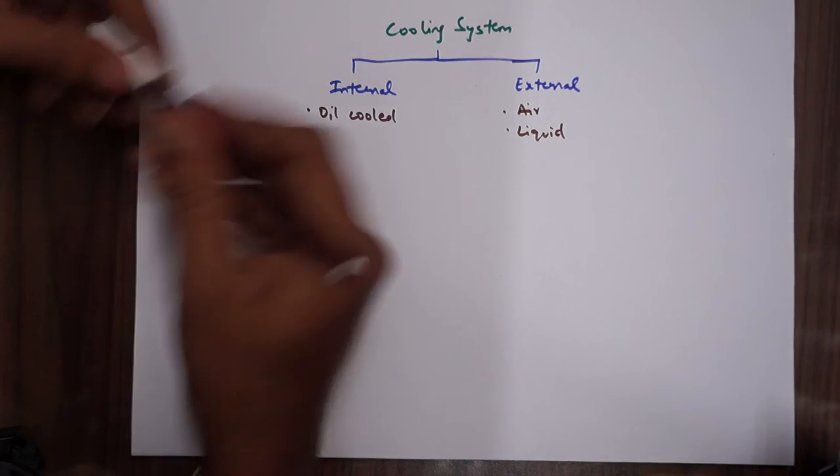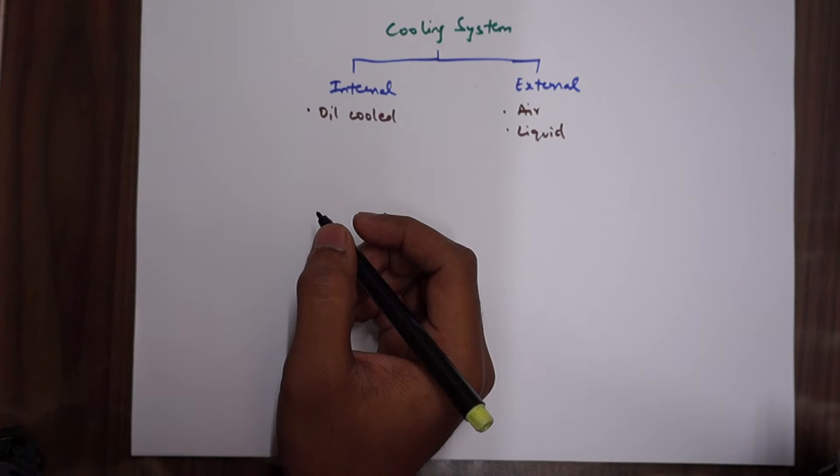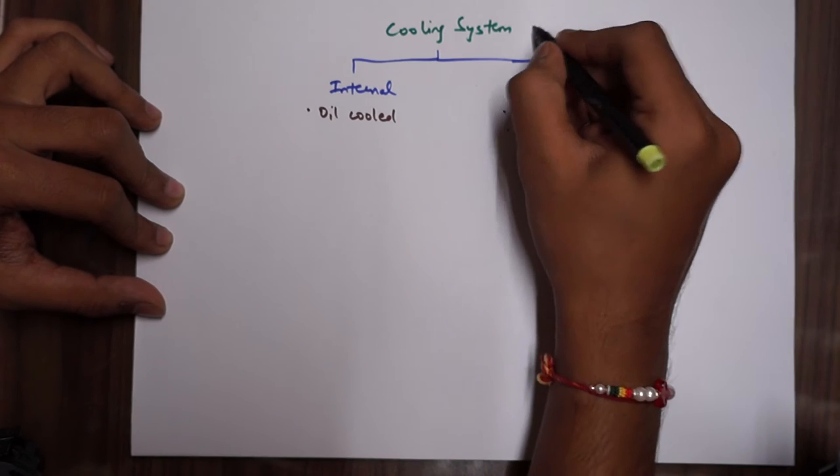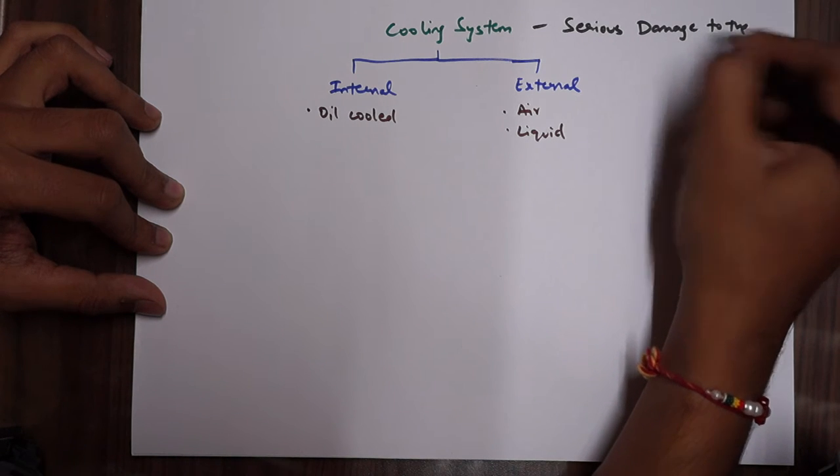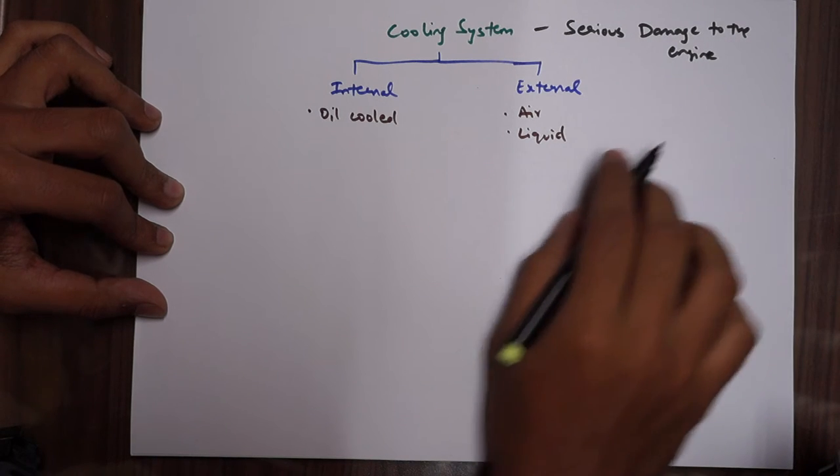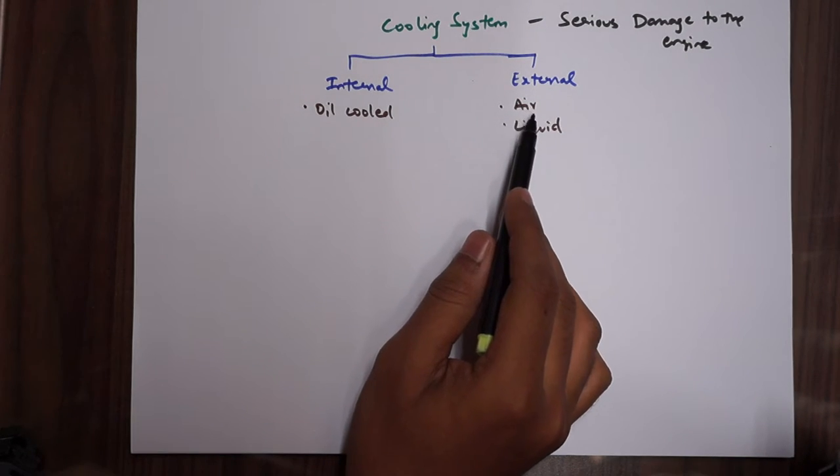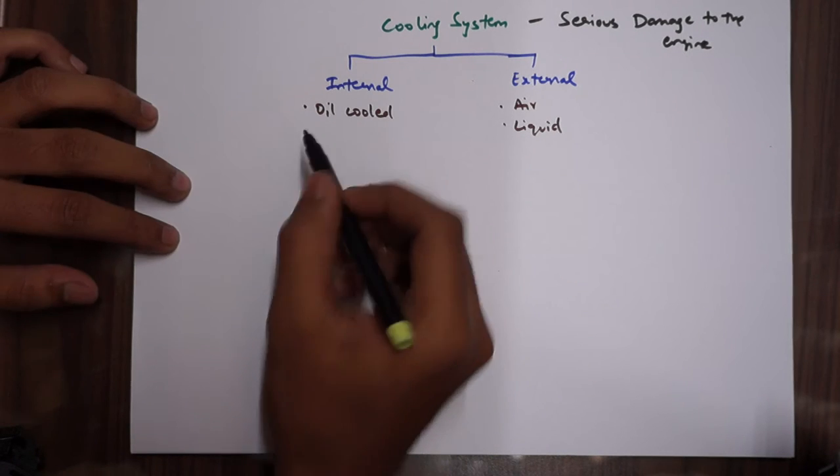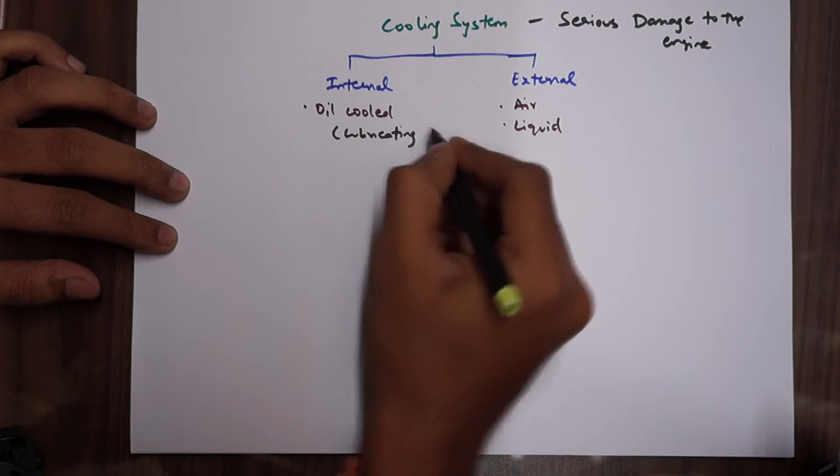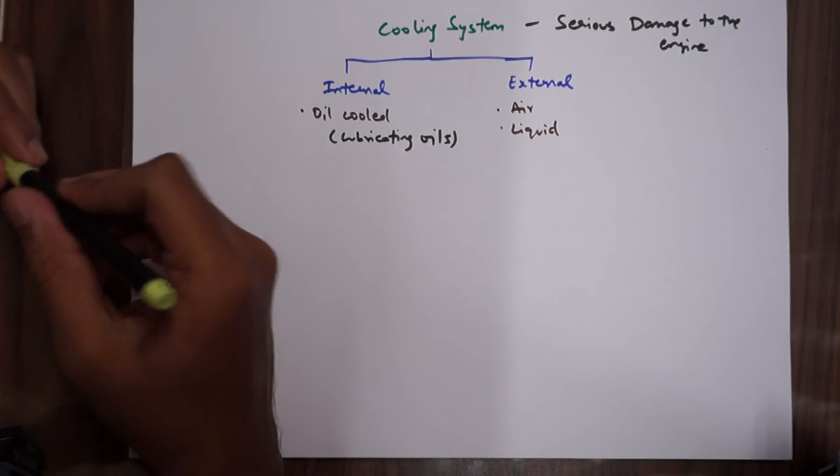We have subtypes: internal is oil cooled, external can be air or liquid. Why do we need cooling? Because the piston engine develops a lot of high temperature because of the friction that is generated inside a piston cylinder. Unless it is cooled, it can really result in serious damage to the engine. We need cooling system to avoid this serious damage.